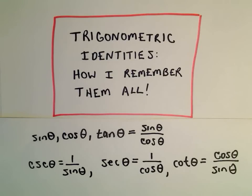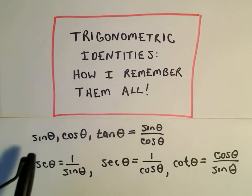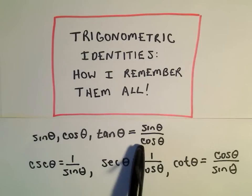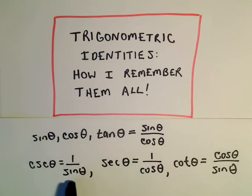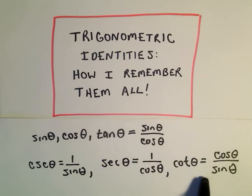In this video I want to talk about some trigonometric identities and how I remember them. There are some things you just have to memorize — the basic ones: sine, cosine, tangent is sine over cosine, cosecant is 1 over sine, secant is 1 over cosine, and cotangent is cosine over sine.